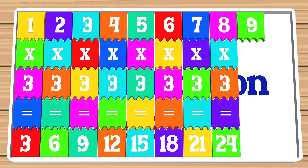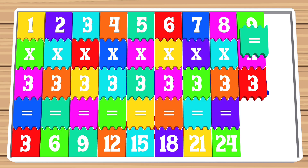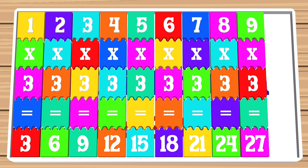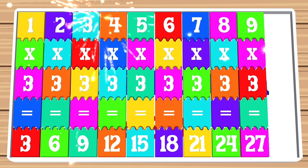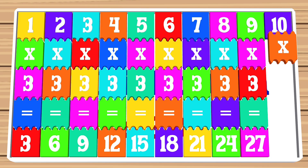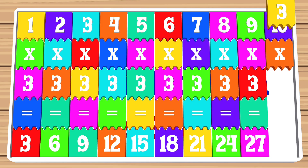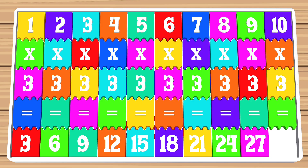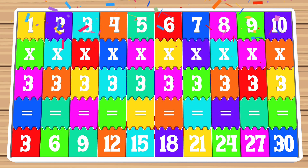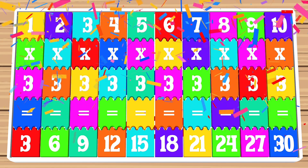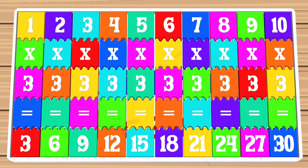9 times 3 is equal to 27. 10 times 3 is equal to 30.